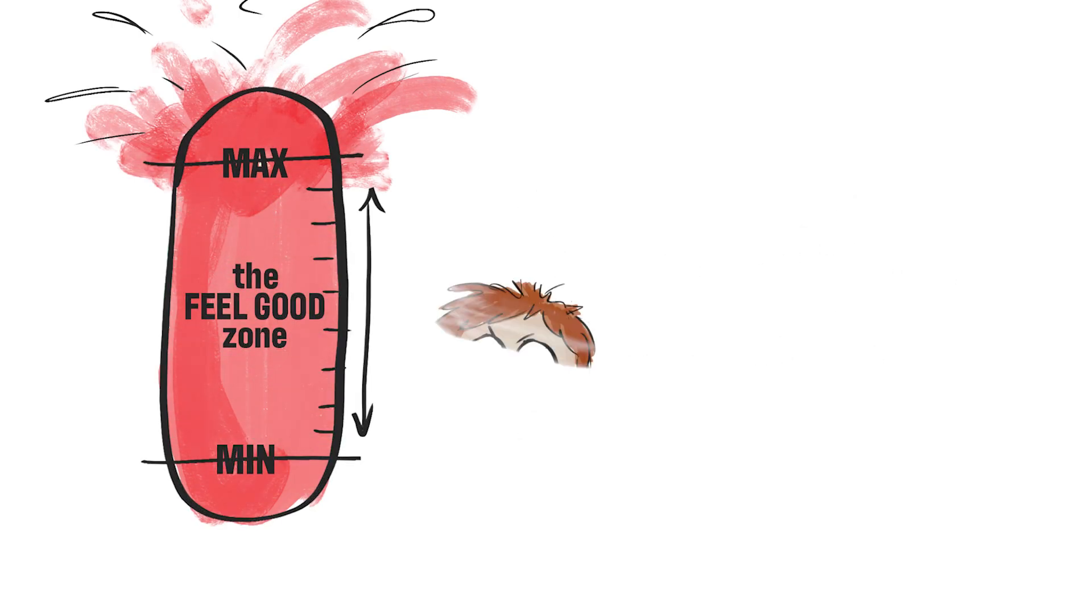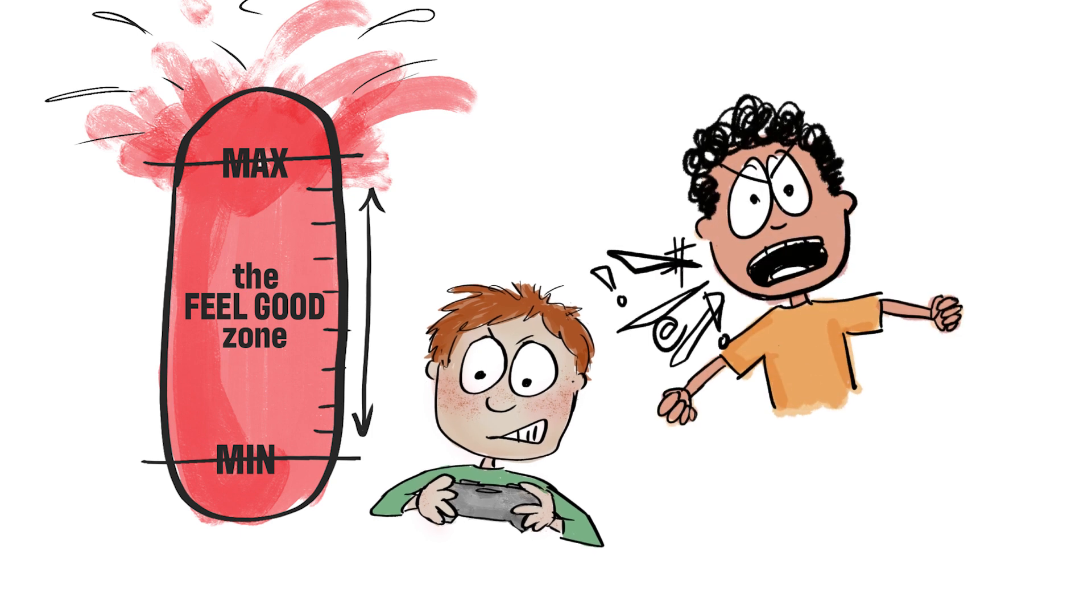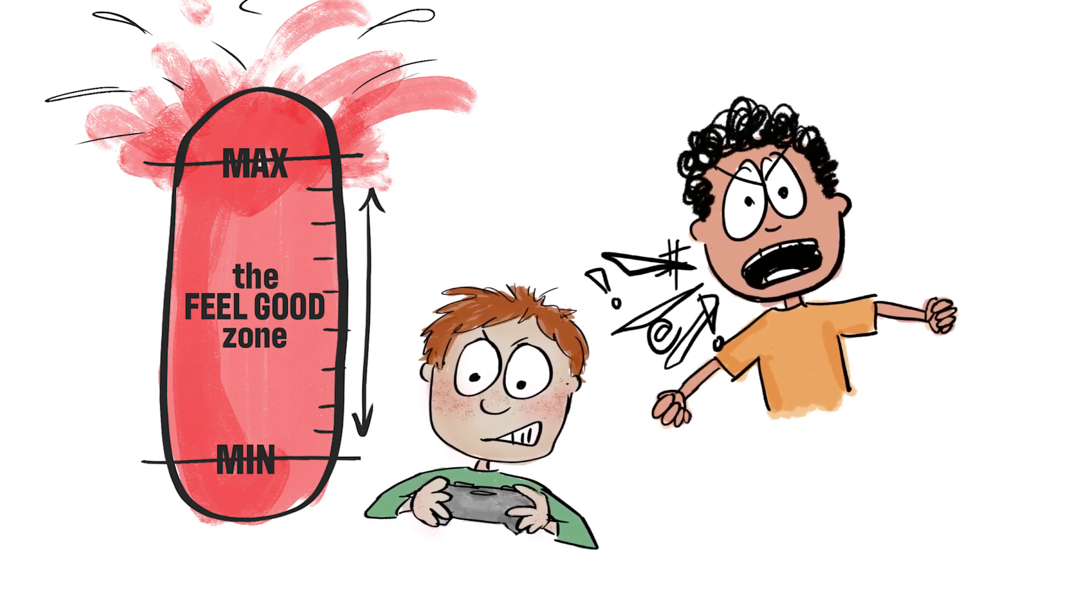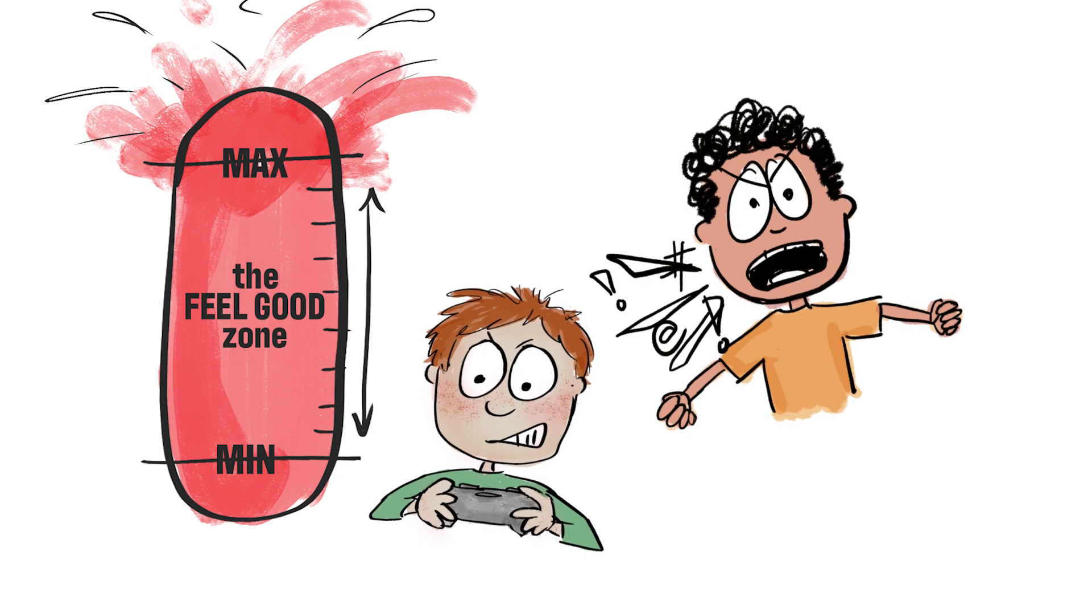Too much dopamine makes us more competitive, more aggressive. It can make it harder to stop ourselves from saying or doing things we wouldn't normally do.